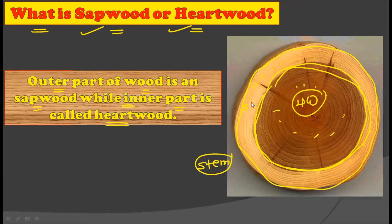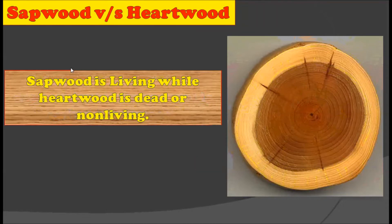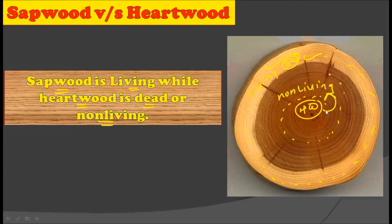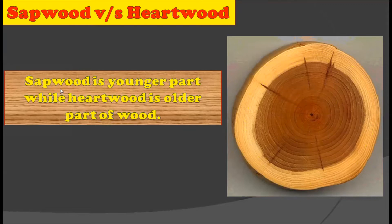To distinguish between sapwood and hardwood: the outer part belongs to the sapwood and the inner part belongs to the hardwood. A very important characteristic is that sapwood is living, while hardwood is dead or non-living. In a single stem there is a part which is living and another part which is non-living — the sapwood is always the living part while the hardwood is always the non-living part.